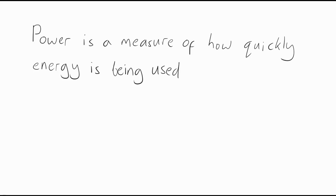Before we go further and look at the equation, let's clarify what we mean when we say that energy is being used. We know that energy can never actually be fully used up — it is never created or destroyed, it just gets changed from one form to another. So to be precise, power is a measure of how quickly energy is transferred from one type to another. For example, a light bulb uses electrical energy and changes it into light energy. So how many joules of electrical energy get changed to light energy every second would be a measure of the power of that light bulb.